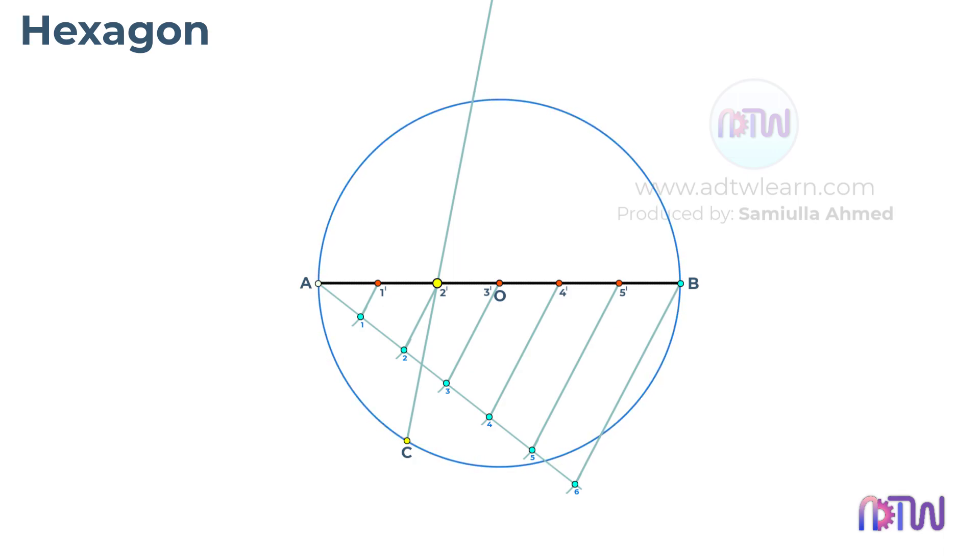Using this length cut an arc on the circumference of the circle. Take a compass and adjust it to this length AC. Cut arcs on the circumference of the circle. These are the 6 required corner points of the hexagon. Join these points with lines.